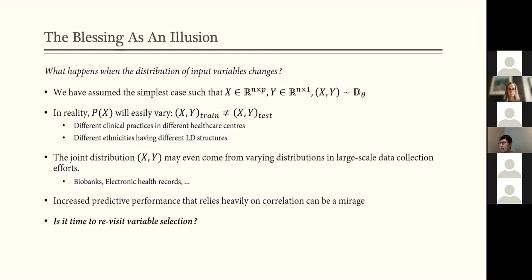So it's probably more common to see that the training and test data sets are being derived from different distributions. And for genetic data, these different ethnicities have different LD structures, so the correlation between the variants can change.